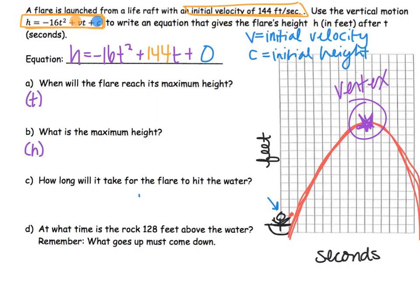So if we think about when will the vertex reach the max height, we need to find this t or the x value, so we need to figure out opposite of b over 2a. And whatever that gives us will be our answer. So the maximum, the when it reaches the max height is the opposite of 144 over 2 times negative 16. And if you simplify, you get 4.5 and our label is seconds.